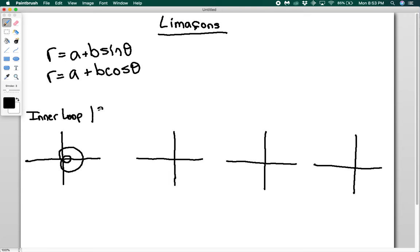when the absolute value of a over b is less than 1. So we ignore the sign here and all we do is a divided by b. If that's less than 1, you're going to have an inner loop.